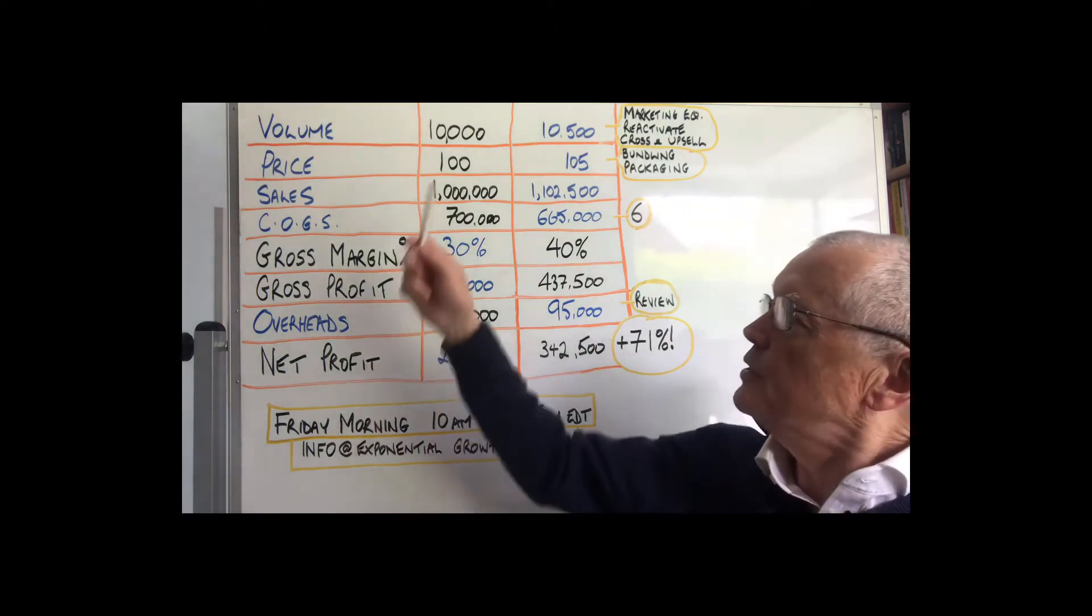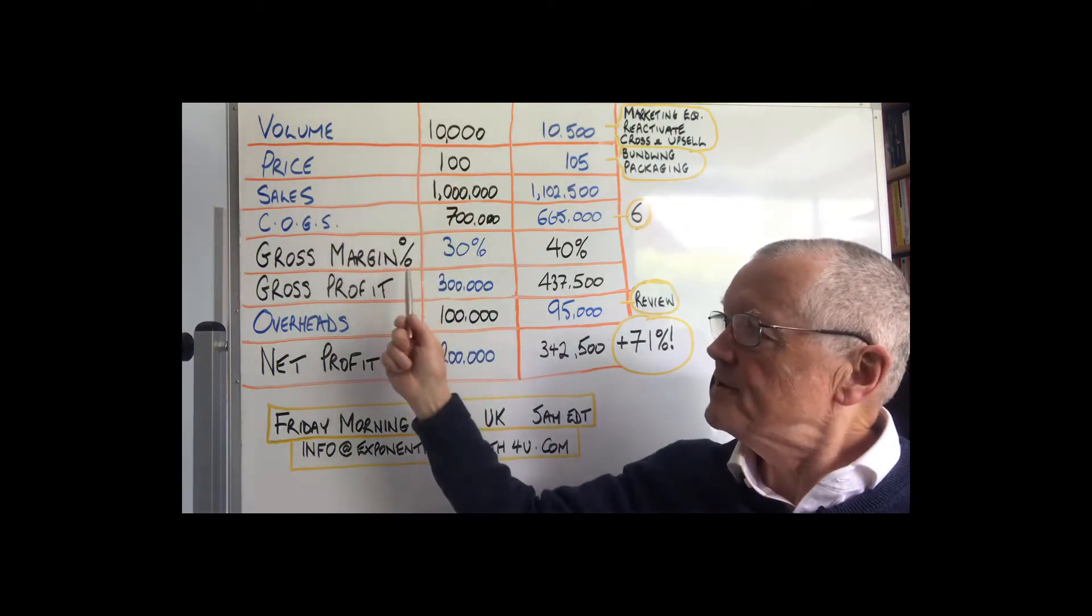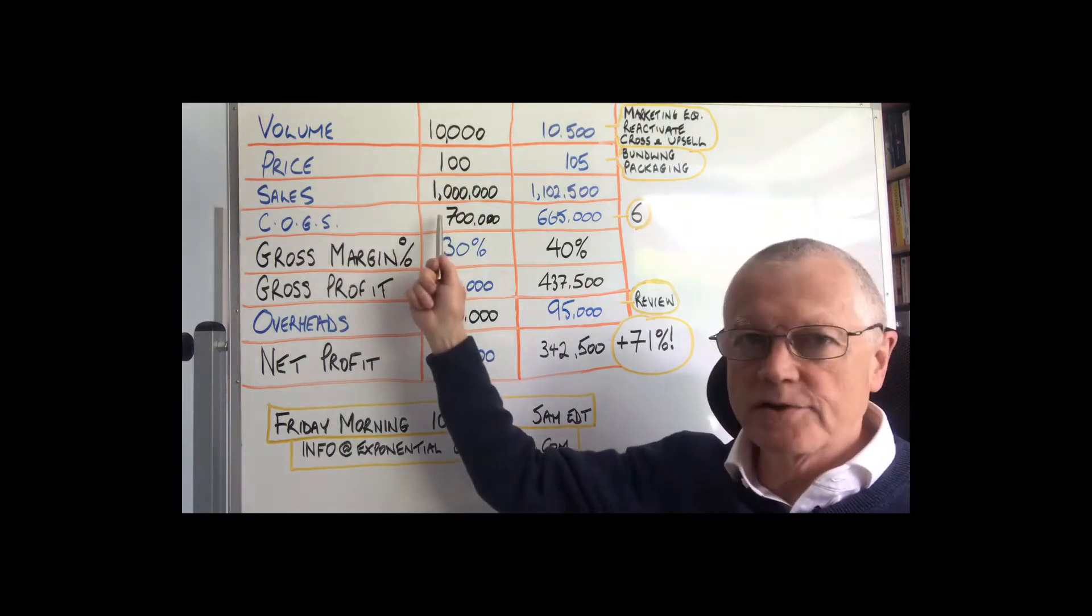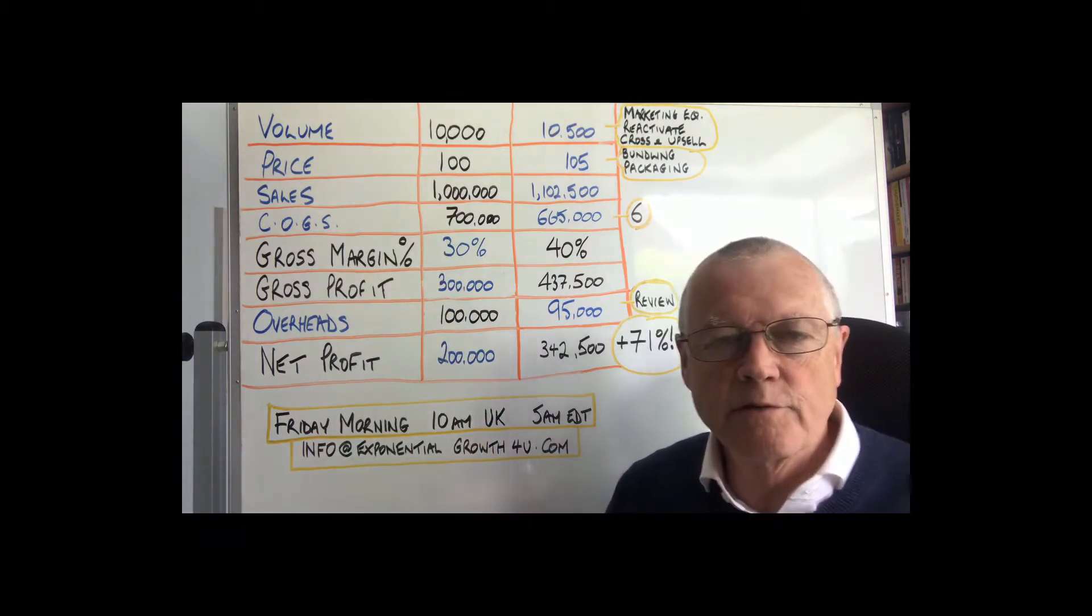Now if we could make 5% increases in our volume and our price and 5% reductions in our variable costs or costs of goods sold and our overheads, what difference would that make? And I think you'll find this really surprising.